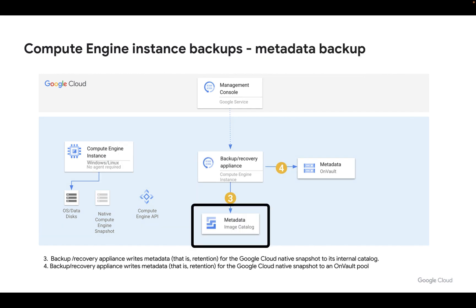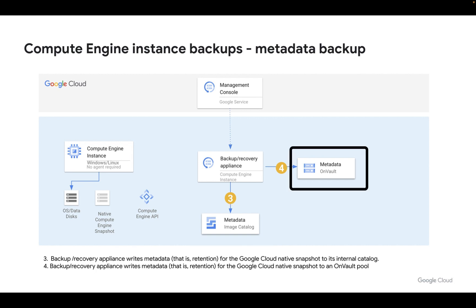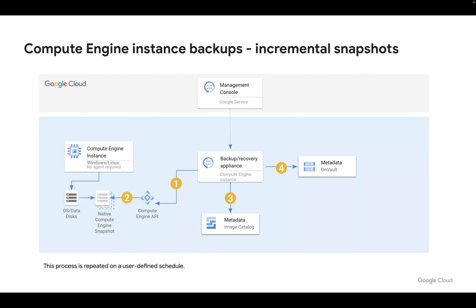Once the snapshot is complete, the metadata for that snapshot is stored both by the backup appliance locally, and also in a special auto-created on-vault pool as part of our metadata backup. Incremental snapshots are then run on demand or by backup plan — so if you've requested one backup every 24 hours, then every 24 hours an additional backup will be created, and these backups are all incremental.